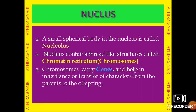A small spherical body in the nucleus is called the nucleolus. The nucleus also contains thread-like structures called chromatin reticulum or chromosomes. During cell division, this chromatin reticulum condenses to form chromosomes. Chromosomes carry genes and help in inheritance — the transfer of characters from parents to offspring.